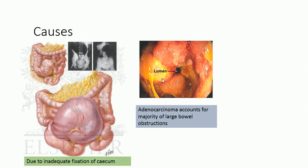The most common cause of large bowel obstruction is adenocarcinoma, which accounts for the majority of cases. As you can see in this picture, the carcinoma growing from the wall has almost obstructed the lumen — there is only a small lumen available for passage of stool. After some time, if the cancer continues to grow, there will be complete obliteration of the lumen.